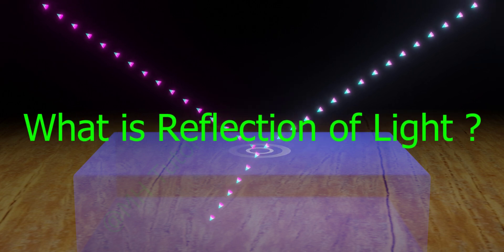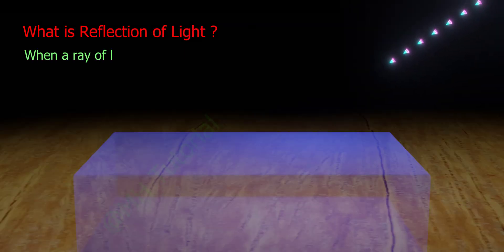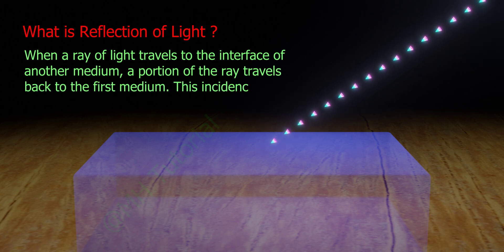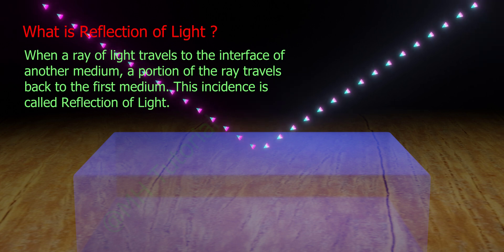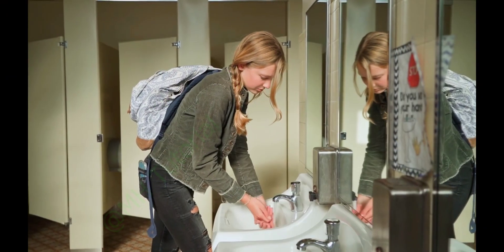So what is reflection of light? When a ray of light travels to the interface of another medium, a portion of the ray travels back to the first medium. This incident is called reflection of light. We all notice reflection.